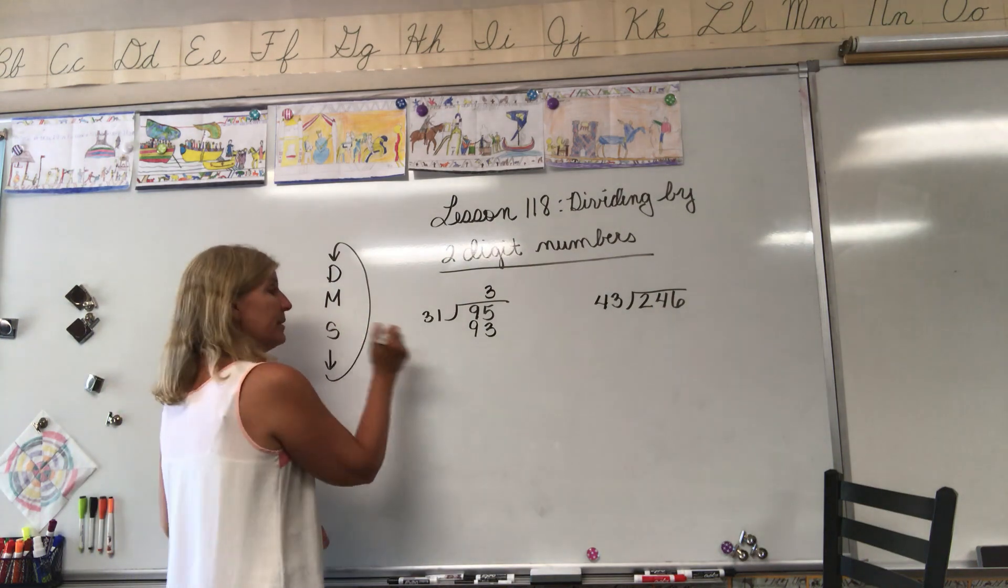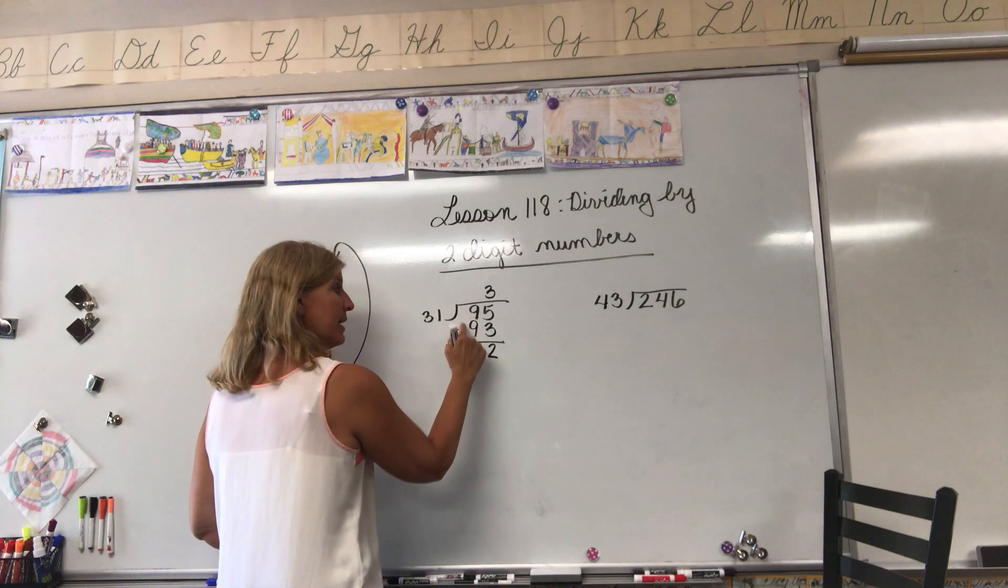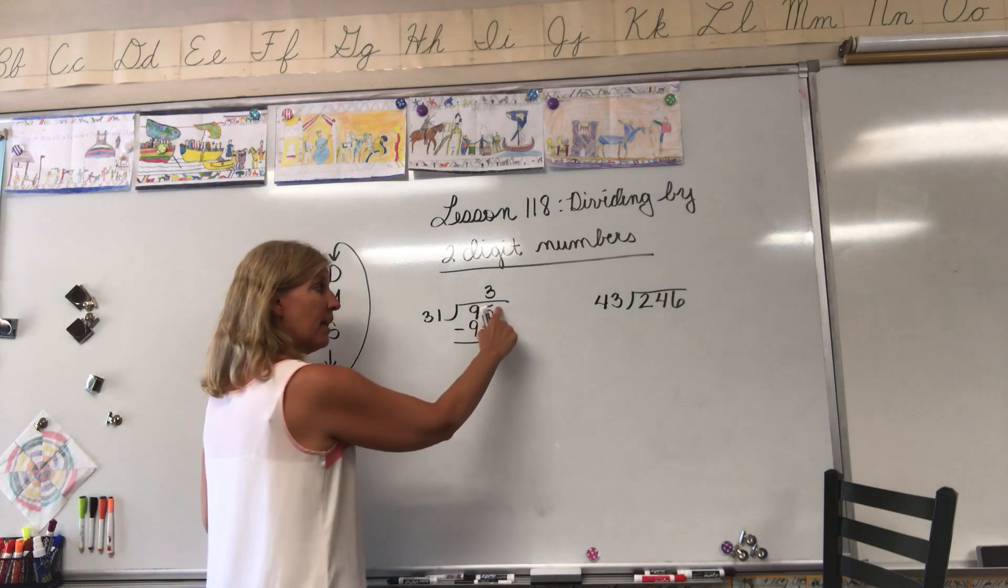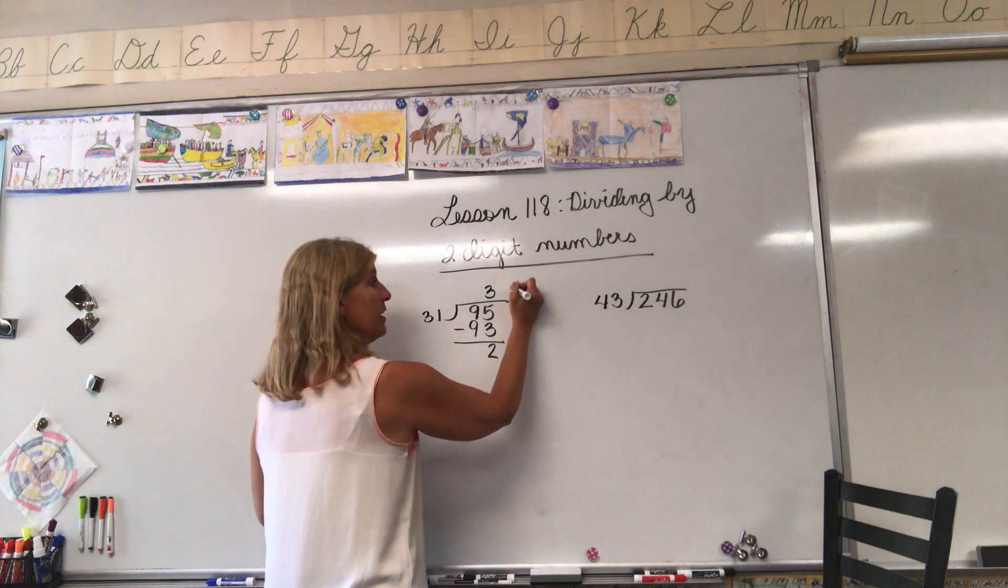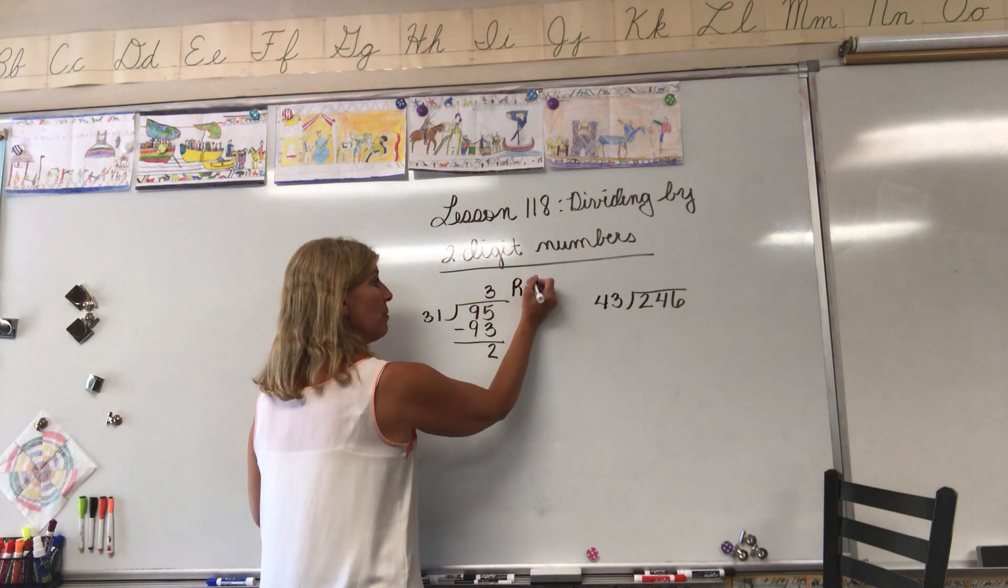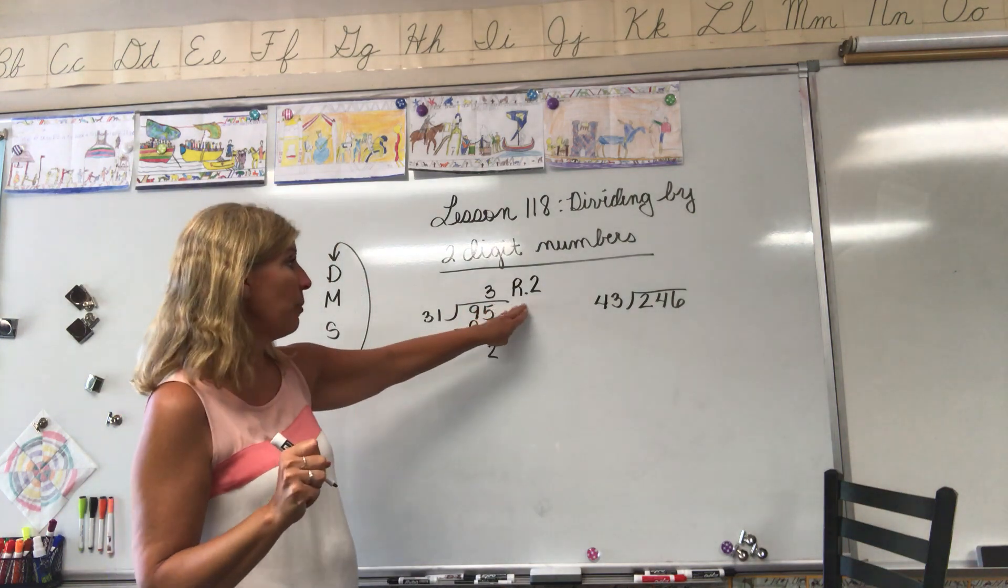Our next step is subtract. Five minus three equals two, nine minus nine is zero. We don't need to write that. There is nothing to bring down so we are finished. The answer is three with a remainder of two.